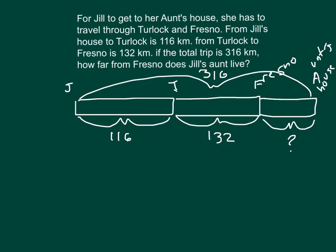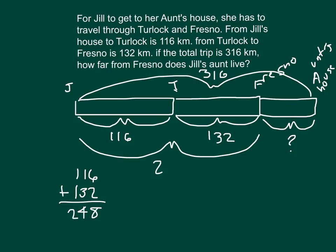What's our first step? Well, let's go ahead and combine this distance here from Jill's to Turlock and from Turlock to Fresno, so we get the distance from Jill's house to Fresno. That distance is 116 plus 132 kilometers, which is 248 kilometers.